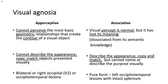Visual agnosia is of two types: apperceptive and associative. In apperceptive visual agnosia, the percept itself is abnormal — the person cannot generate the basic contour of the visual object, as the brain cannot understand the geometric relationships to create a contour. Because the basic percept is absent, the person cannot describe the object visually, cannot name it, cannot copy it into a drawing, and cannot match it to a similar object. Apperceptive agnosias are usually seen with bilateral occipital lesions involving V2, or unilateral right-sided lesions.